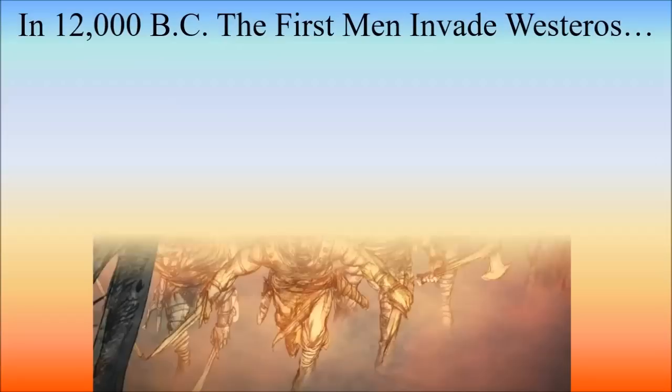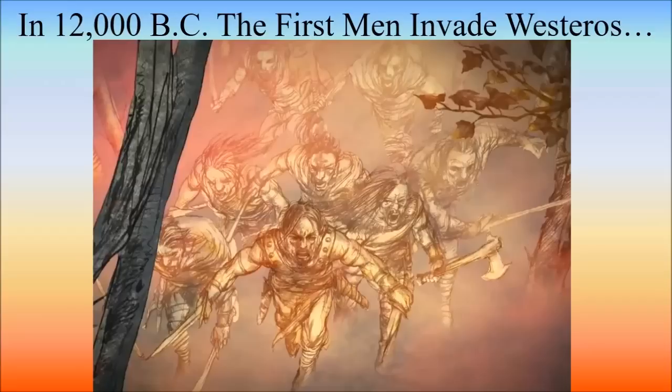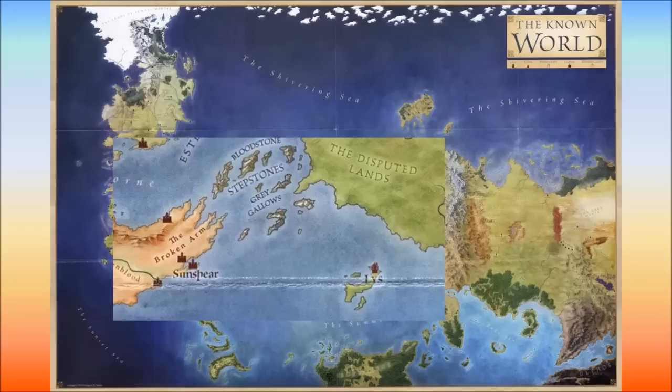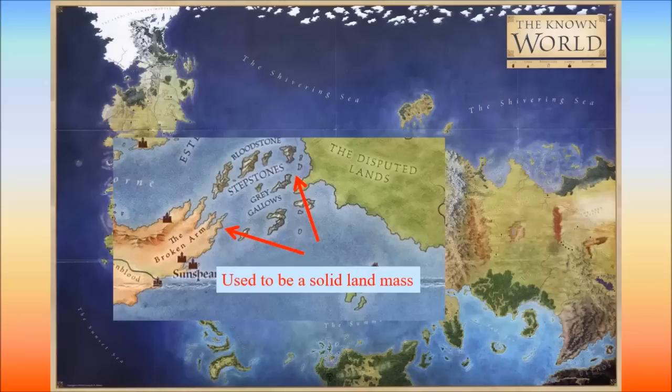We start our exploration in the Dawn Age. The First Men — literally the people believed to be the first humans — set foot on Westeros more than 12,000 years before the start of the first book. They came to Westeros from Essos through a land bridge between the two continents that used to be called the Arm of Dorne. No one can say where in Essos human beings actually came from originally.